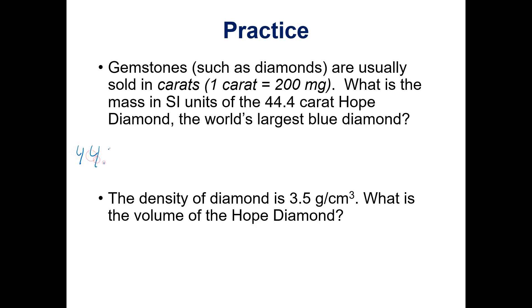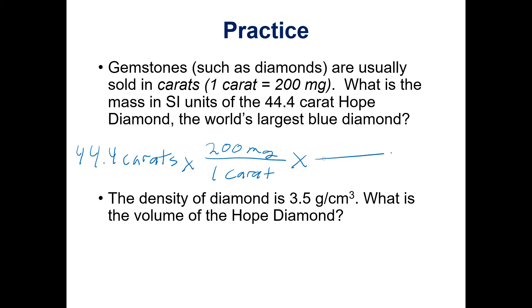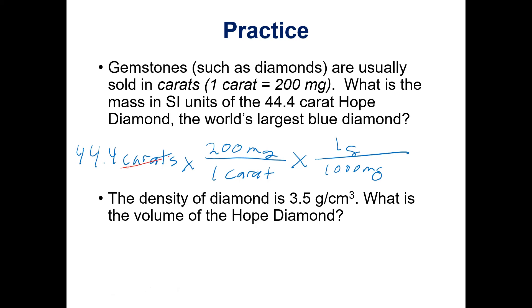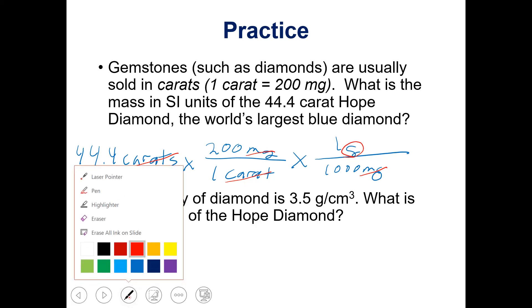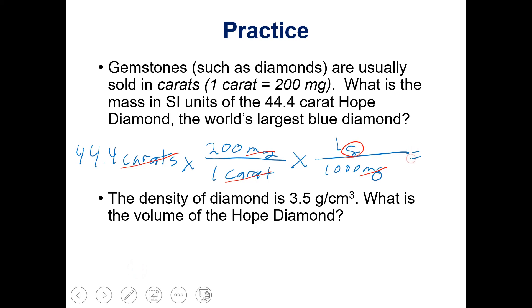Starting with 44.4 carats, we want to get rid of carats so we put that on the bottom and milligrams on top. Then we want to go from milligrams to grams — we know there are 1000 milligrams per gram. This way we cancel out carats and milligrams and we end up with grams. If you put this into your calculator — 44.4 times 200 divided by 1000 — you come up with 8.88 grams.